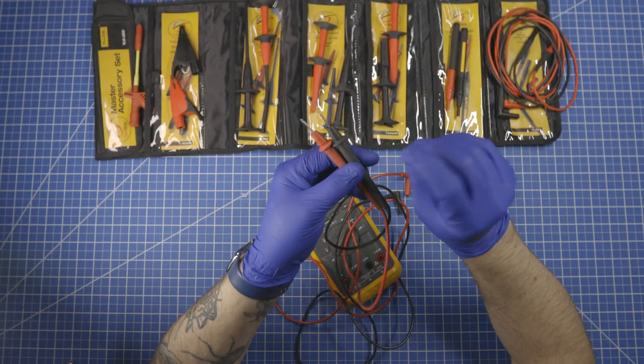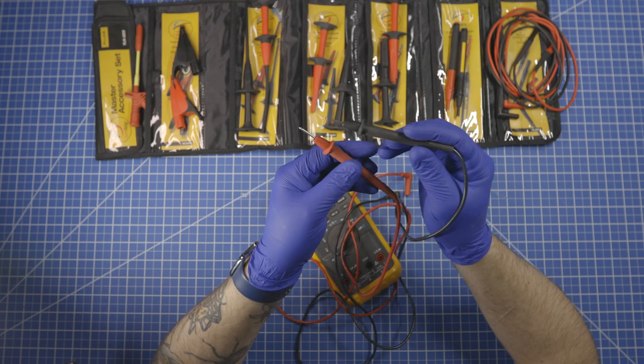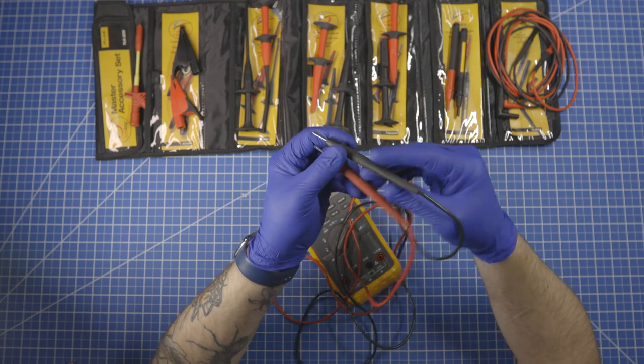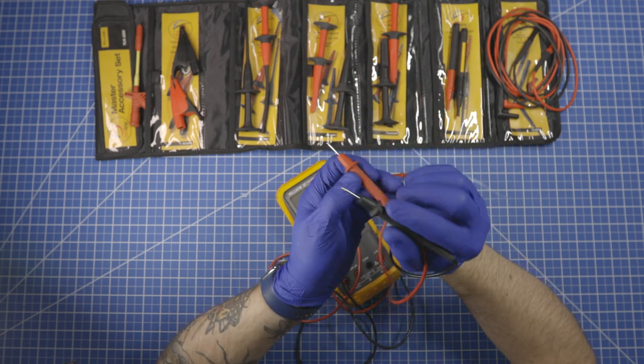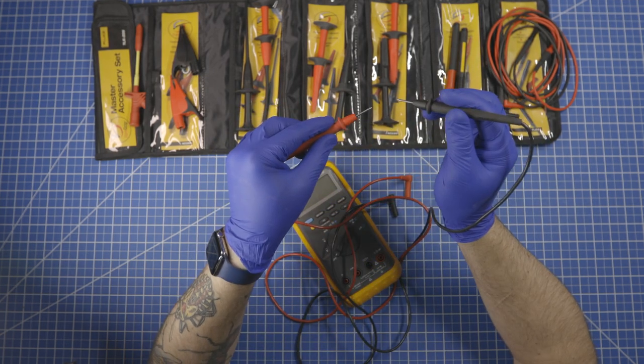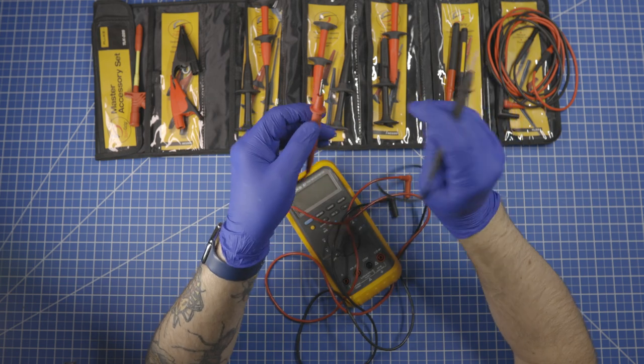Obviously they don't grab on to things. You have to either use your chopstick skills to use it with one hand or use two hands to touch the probes to whatever it is that you're measuring.